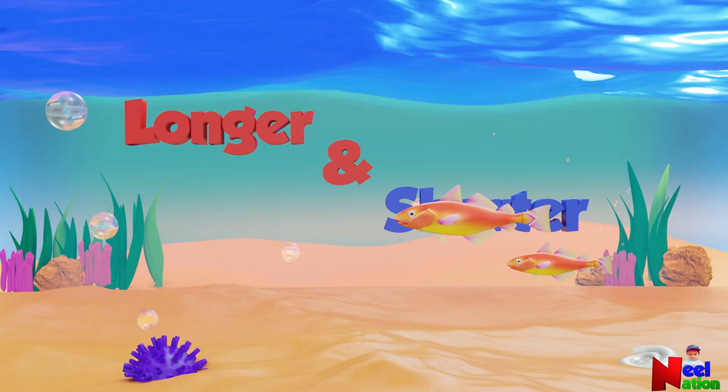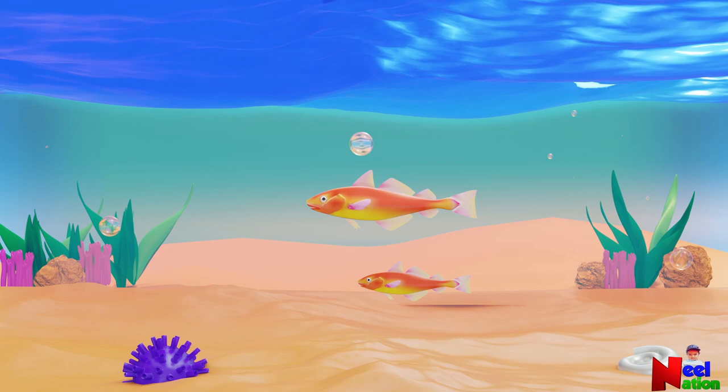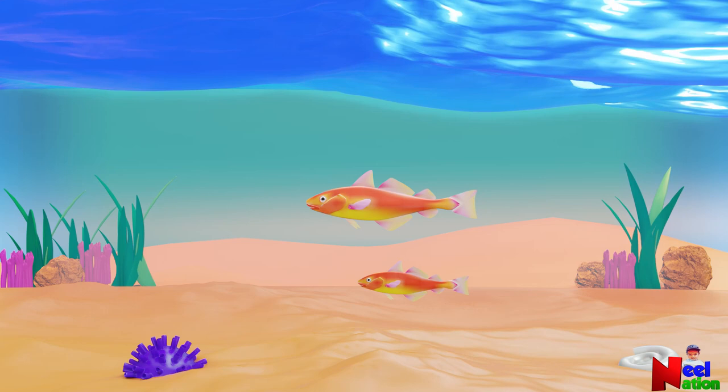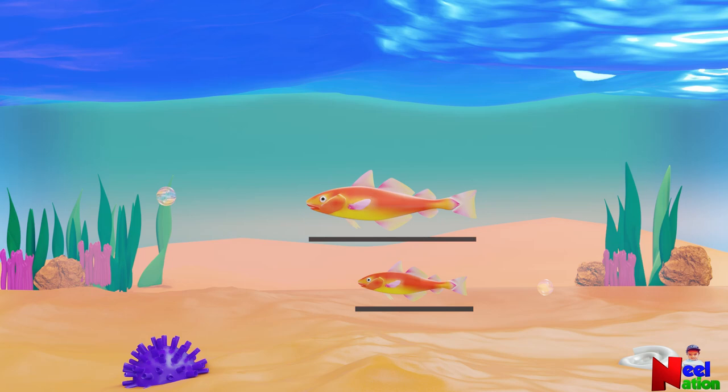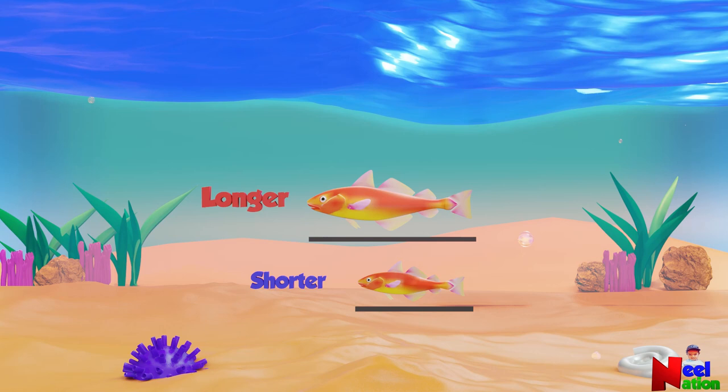Mommy fish and baby fish is going for a swim. Both of them have different length. One of them is longer than the other. Length refers to the distance between two ends of an object. So here you can say that the mommy fish is longer and baby fish is shorter.